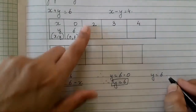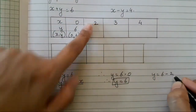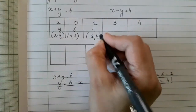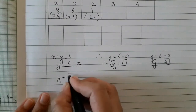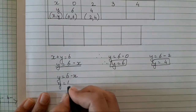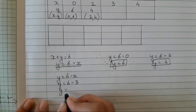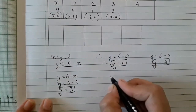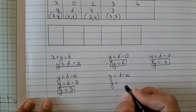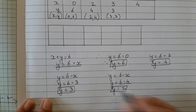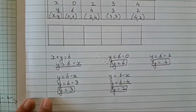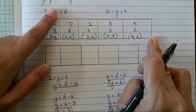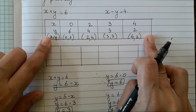Continuing with y = 6 minus x: when x = 2, y = 4; when x = 3, y = 3; when x = 4, y = 6 minus 4 = 2. So the pairs are (0,6), (2,4), (3,3), and (4,2) for the equation x plus y is equal to 6.